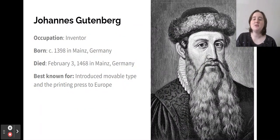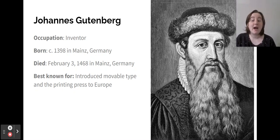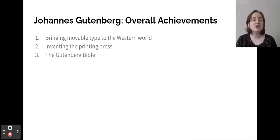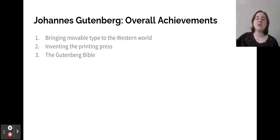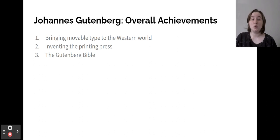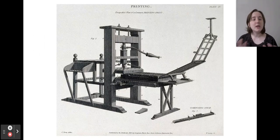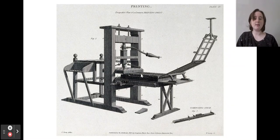Next is Johann Gutenberg. His occupation was inventor. He was born around 1398 in Mainz, Germany, and he died February 3rd, 1468 in Mainz, Germany. He was best known for introducing movable type and the printing press to Europe. His overall achievements were bringing movable type to the Western world — it had already been invented in China, but he's the one who brought it to Europe — inventing the printing press, and the Gutenberg Bible. Here is a picture of the printing press, where the words would get stamped on the paper and then the paper would get fed through.